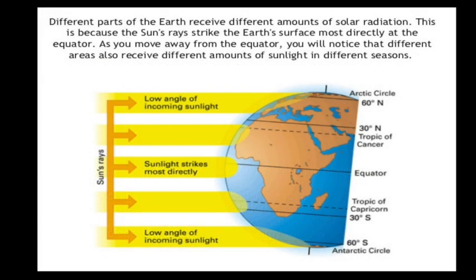Different parts of the earth receive different amounts of solar radiation. This is because the sun's rays strike the earth's surface most directly at the equator. As you move away from the equator, you will notice that different areas also receive different amounts of sunlight in different seasons, for example.